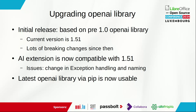Upgrading the OpenAI library. The initial release of the extension was based on the pre-1.0 OpenAI library. The current version is 1.51, so there were a lot of breaking changes since then. The AI extension is now compatible with the latest OpenAI library. The issues were mostly around changes in exception handling and naming in the library.